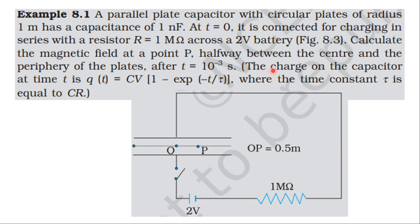The charge on the capacitor at time t is given by q(t) equal to C into V into 1 minus exponential minus t by tau, where the time constant tau is equal to CR.